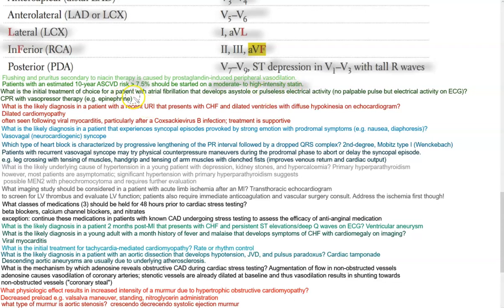What is the most likely diagnosis in a patient with a recent URI that presents with CHF and dilated ventricles with diffuse hypokinesia on echocardiogram? The answer is in the question — dilated cardiomyopathy. This is often seen following viral myocarditis, particularly after a Coxsackievirus infection. Treatment is supportive. Remember, viral myocarditis typically affects younger patients and is caused by Coxsackievirus.